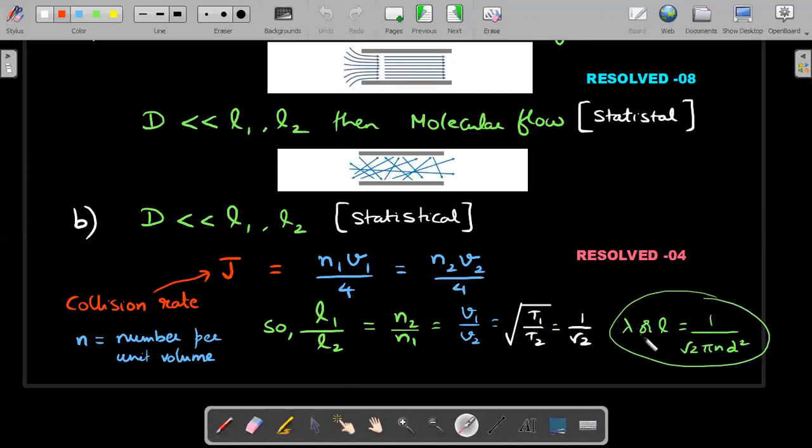In this scenario, recall the formula for mean free path: L equals one by root two pi N D squared. This one by N is the important factor - Lambda is inversely proportional to number concentration. So L1 divided by L2 is N2 divided by N1, which from this context is V1 by V2. V1 by V2 is proportional to square root of temperature. Therefore L1 by L2 is root of 150 Kelvin divided by 300 Kelvin, which equals one by root two. That's the answer for the molecular type of flow where the diameter is very small.